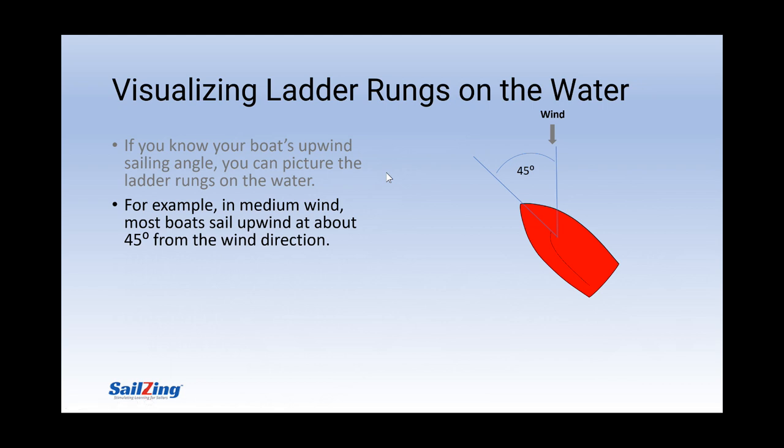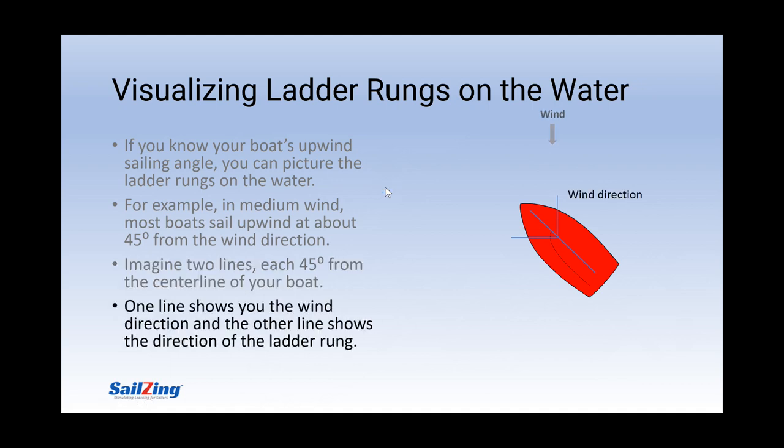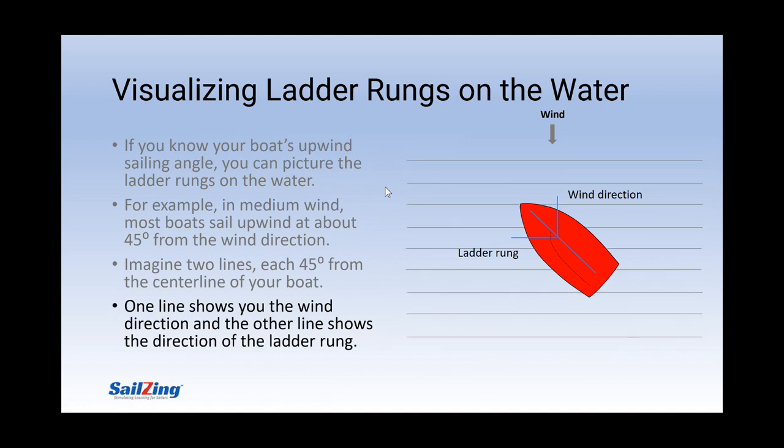For example, in medium wind, most boats sail upwind at about 45 degrees from the direction of the wind. Imagine two lines, each 45 degrees from the centerline of your boat. The 45 degree line to windward shows you the wind direction. The 45 degree line to leeward shows you the direction of the ladder rungs. In the past, some sailors would actually mark these lines on their boats. They're called tacking lines.